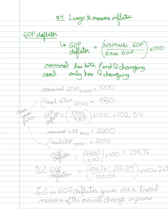So let's give an example here. Let's say that the nominal GDP in 2000, I'm just going to keep the numbers simple here, is 1000, but the real GDP in 2000 equals 980. Then 1000 over 980 times 100 is going to give me 102.04.